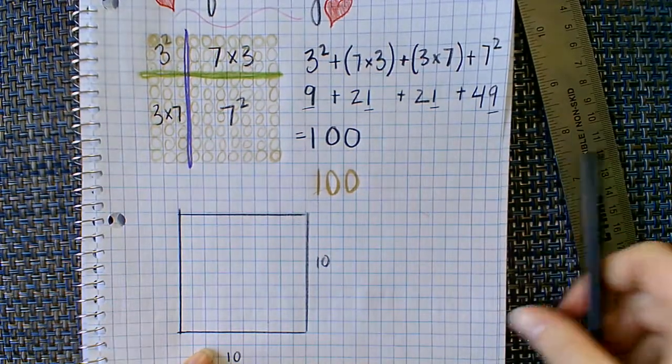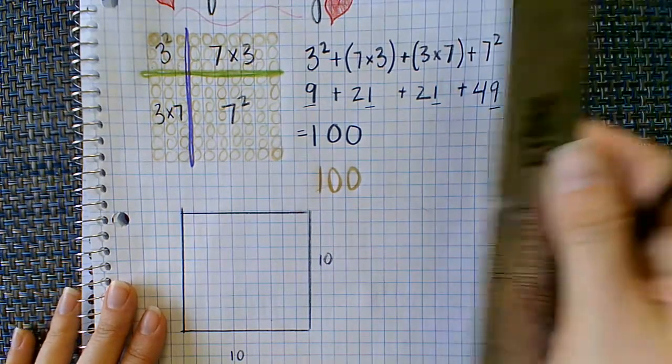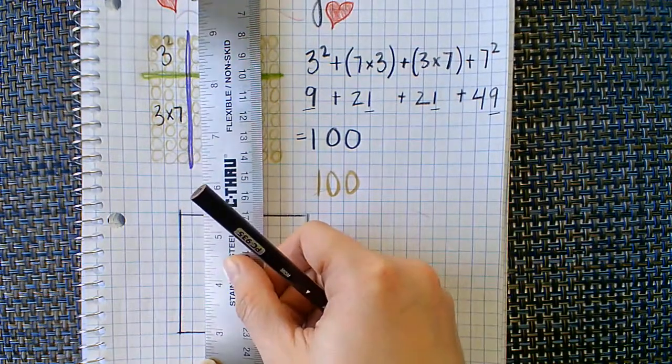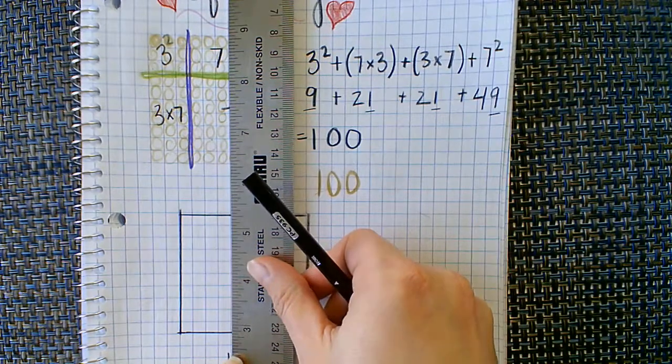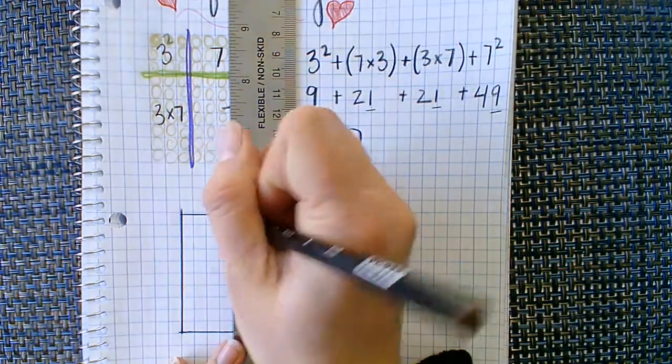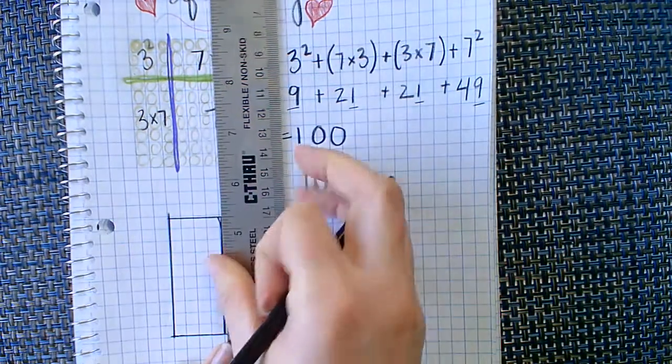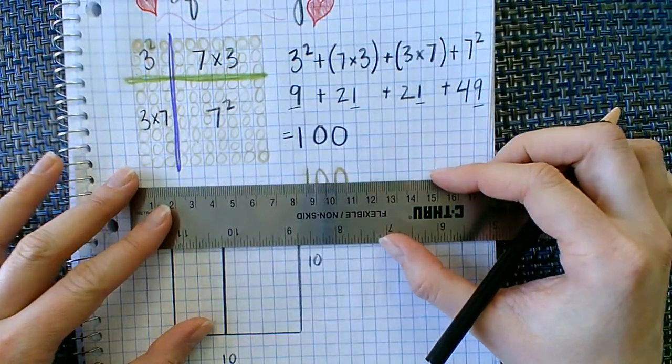And then we can, instead of having a rubber band or a hair tie or anything, we can just count with our ruler, one, two, three, four, and then I'm going to draw a line. And then I've got to draw another line, four down, one, two, three, four.